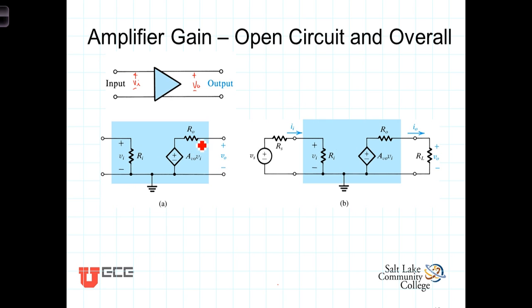And then there's an output resistance associated with this to model the reality of all circuits that when current flows, voltage drops. There's no such thing as resistanceless conductors. This is referred to as the open circuit model of the amplifier. In this case, it's a voltage out and a voltage in, so this is what we would refer to as a voltage amplifier.